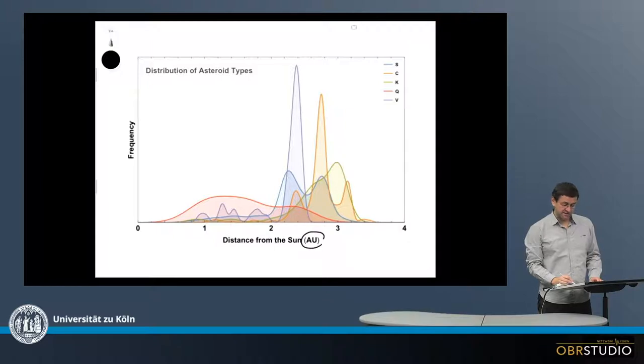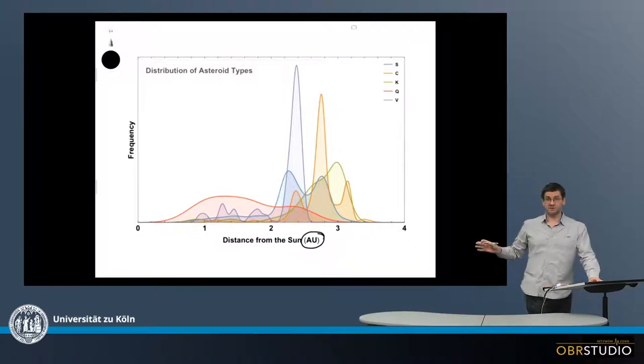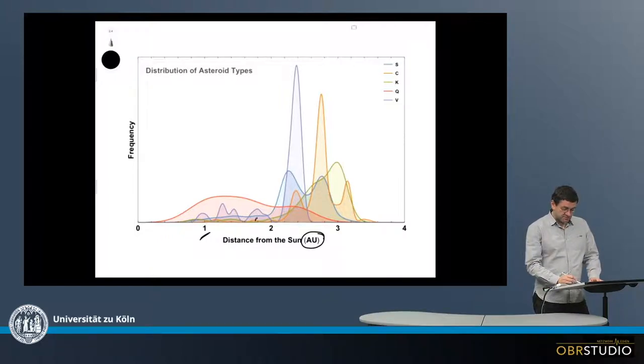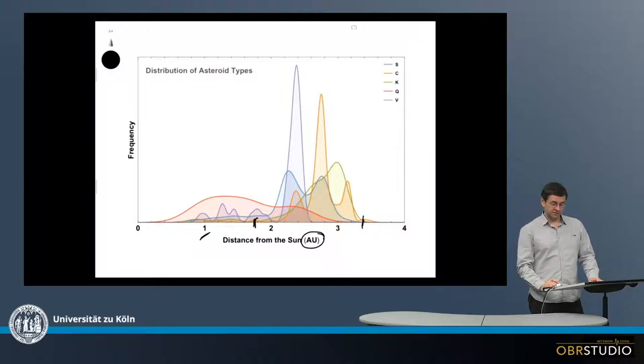On the x-axis is the distance of the asteroids from the Sun in astronomical units. Earth would be here at 1, and they cluster around somewhere between 2 and 3.2 astronomical units.